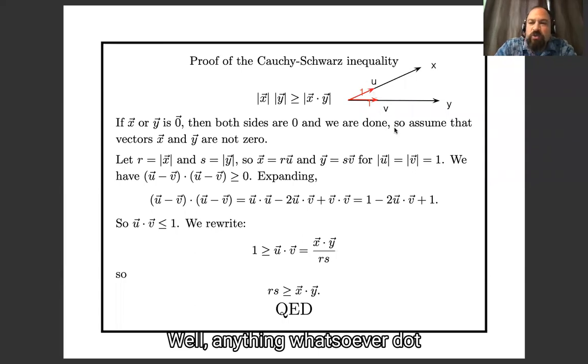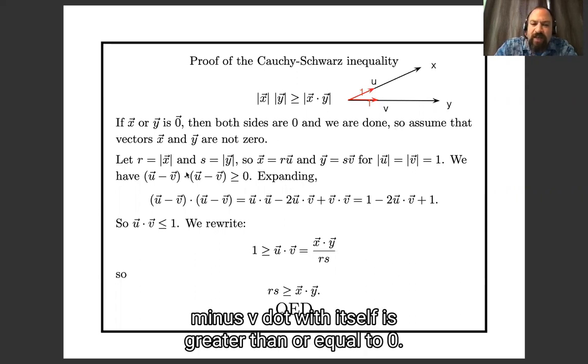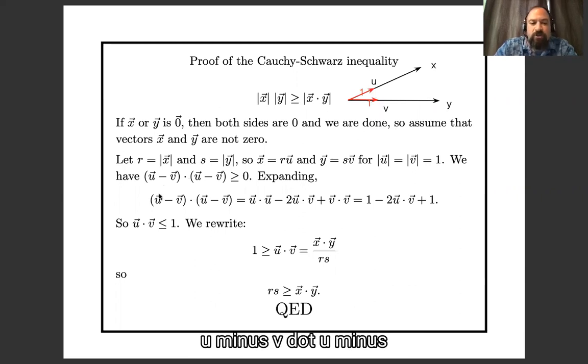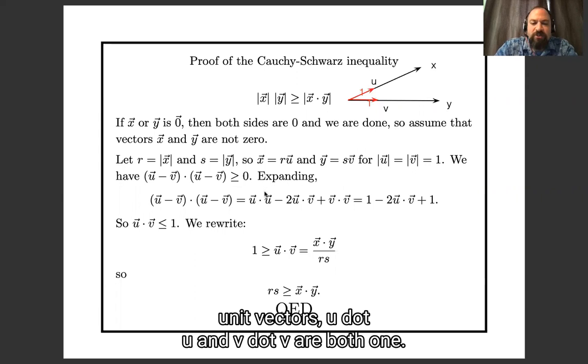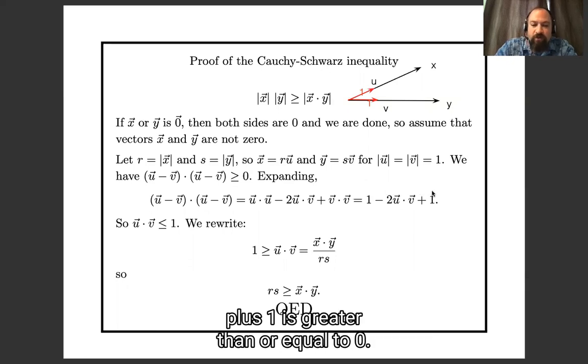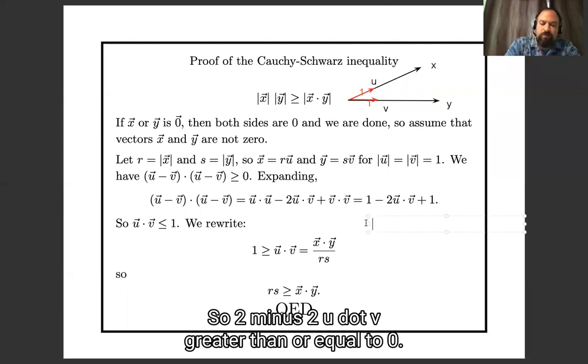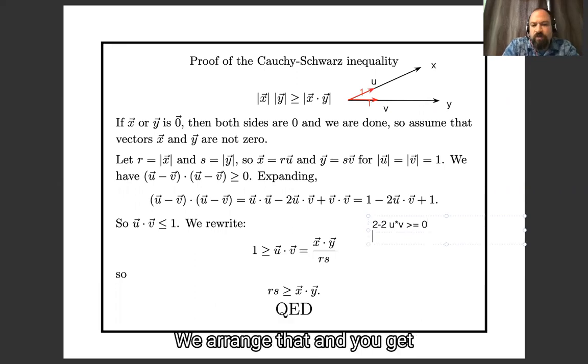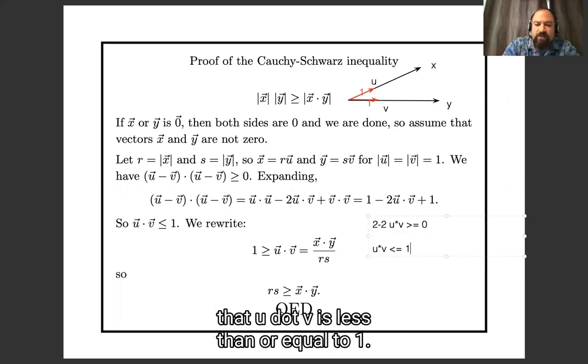Okay. Well, anything whatsoever dot with itself is greater than or equal to 0. So in particular, u minus v dot with itself is greater than or equal to 0. And let's just write what that means. u minus v dot u minus v. If we use a distributive property, that's u dot u minus 2 u dot v plus v dot v. Since u and v are unit vectors, u dot u and v dot v are both 1. So we get 1 minus 2 u dot v plus 1 is greater than or equal to 0. So 2 minus 2 u dot v greater than or equal to 0. Rearrange that and you get that u dot v is less than or equal to 1.